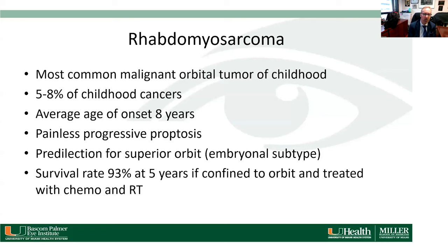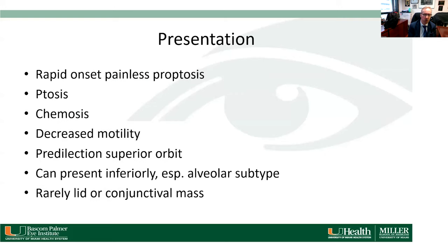The survival rate for rhabdomyosarcoma is over 90 percent if caught when the tumor has not progressed. Presentation includes rapid onset of progressive painless proptosis, ptosis, chemosis, and decreased motility. There's a predilection for the superior orbit and it can also present inferiorly in the alveolar subtype.